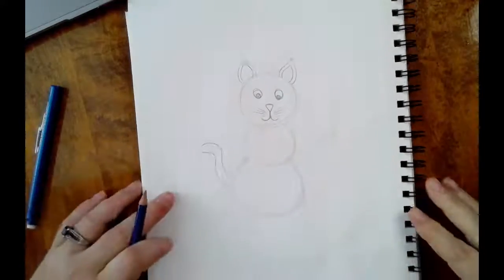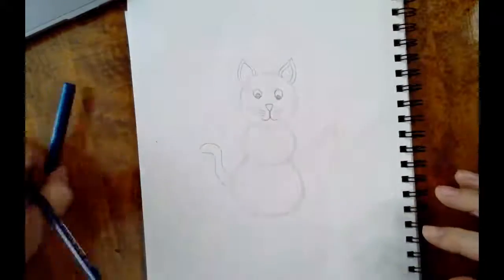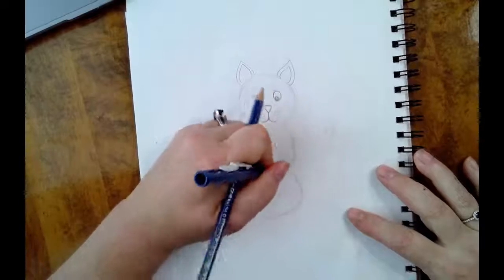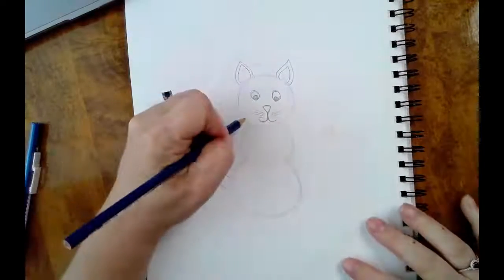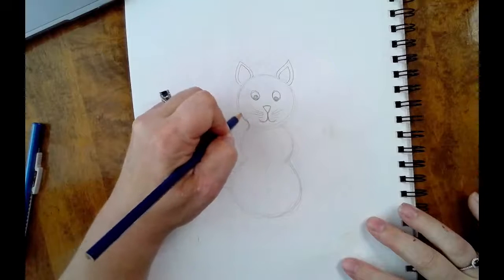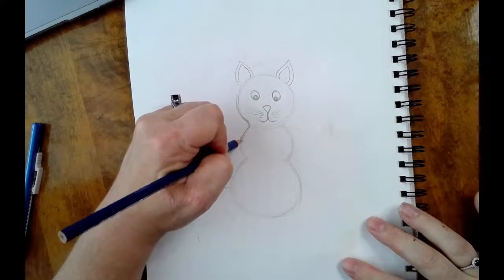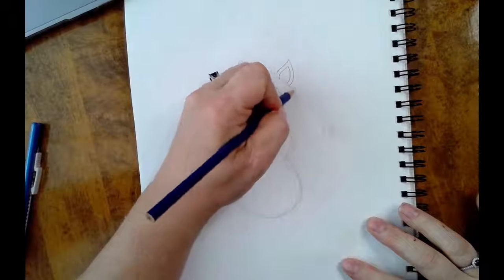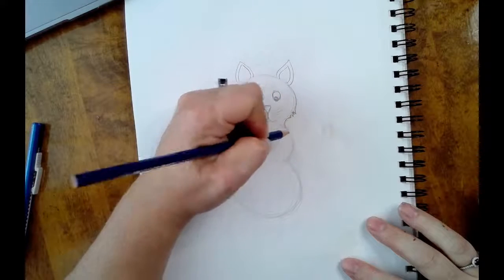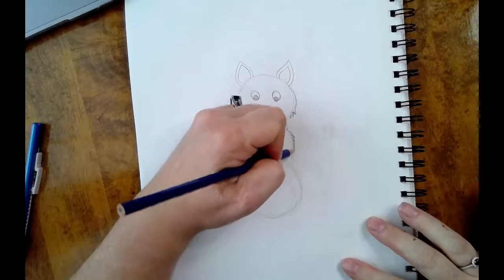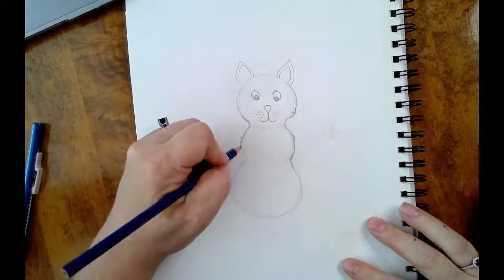Now he still needs some legs, and we need to smooth out some of these circles so he doesn't look quite so much like a snowman. So I'm going to erase that middle line right there and make his neck a little smoother. You can add some furry spots if you want. Smooth that out, just like that.